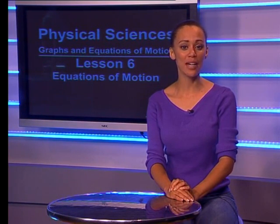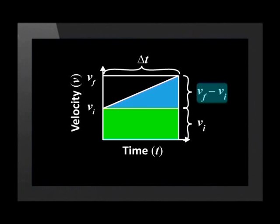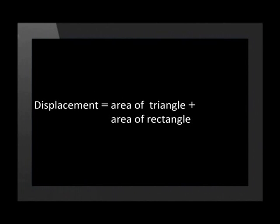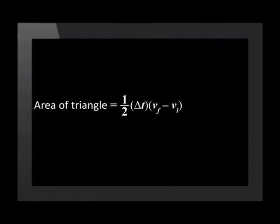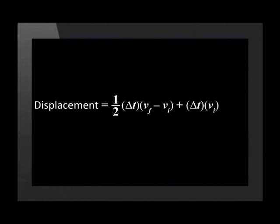Now let's see how the second equation of motion was developed. We can calculate the displacement of an object by using the area under the velocity-time graph. The displacement equals the area of the triangle plus the area of the rectangle. The length of both the triangle and the rectangle is given by delta t. The height of the rectangle is v_i, and the height of the triangle is v_f minus v_i. The area of the triangle is half times delta t times (v_f minus v_i), plus the rectangle area delta t times v_i.